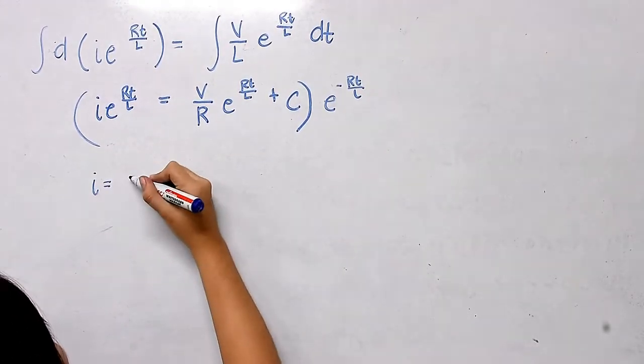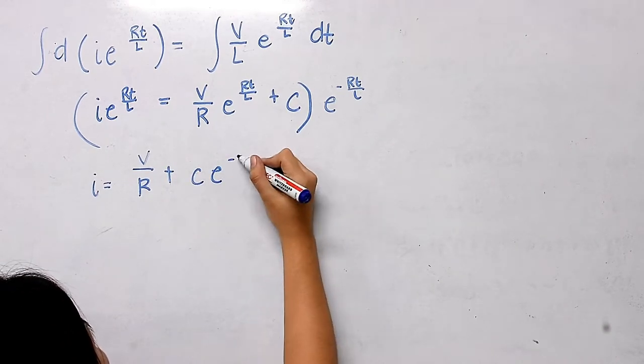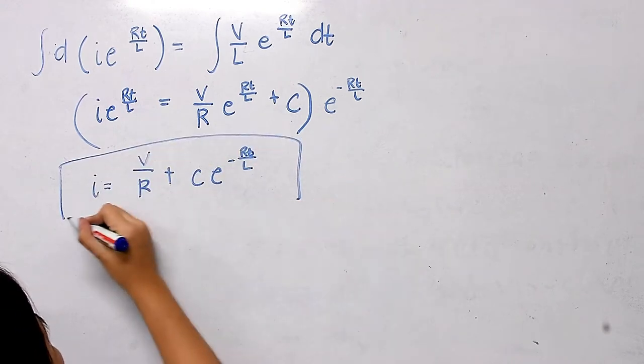So simplifying, the equation we have now is i equals V/R plus C times e raised to the power of negative RT/L.